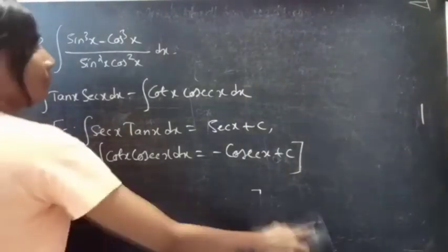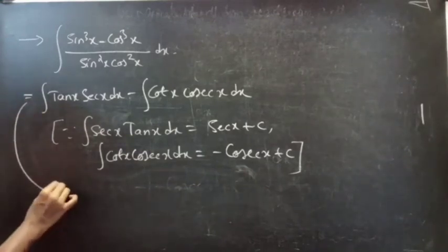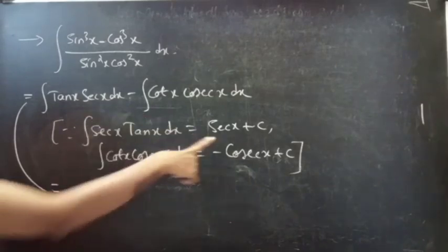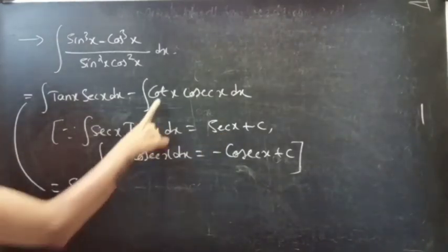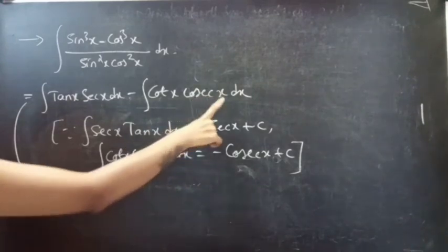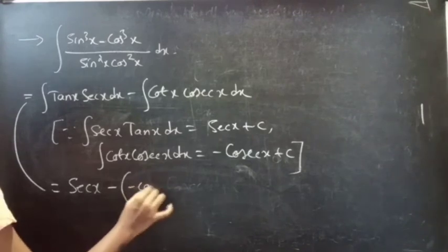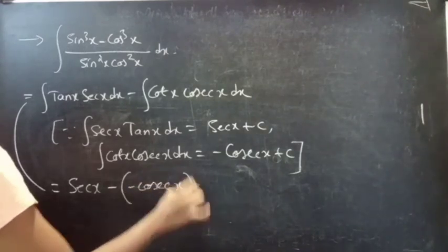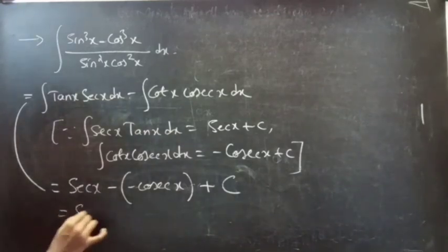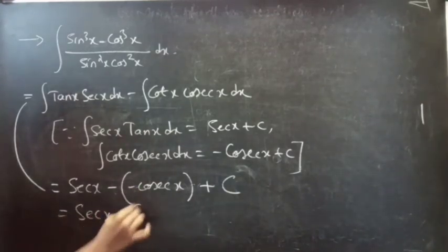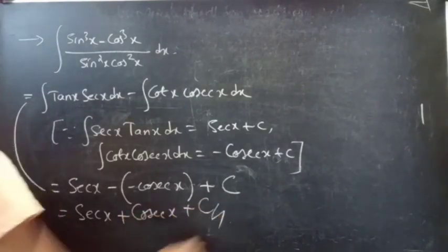Applying the formulas: the integral of sec x · tan x gives sec x, and minus the integral of csc x · cot x gives minus(minus csc x), which is plus csc x. So the final answer is sec x + csc x + C.